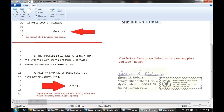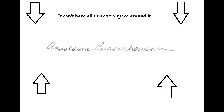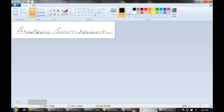In order to do that, of course, we have to have your images, so let's go over how to prepare those. The easiest way is just to sign a piece of paper or put your notary stamp on a piece of paper, but you'll see how you have all this extra space around it. So when you save it to your computer, it'll be just like that — we need it to be small and cropped.